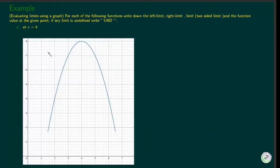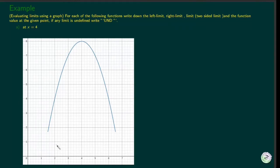Now let's go over some examples. We are asked to evaluate the right limit, left limit, and limit at each point. If the limit is undefined, we write undefined. For the part where x equals 4, we are asked to find the limits. First, let us find the right limit at x equals 4. We have to approach 4 from the right side.